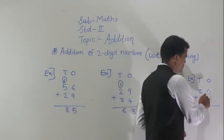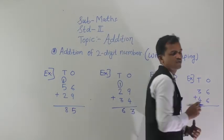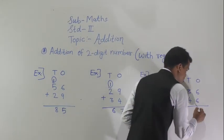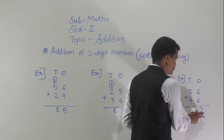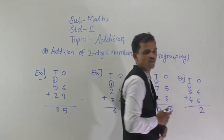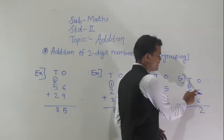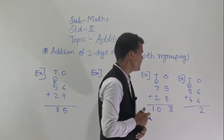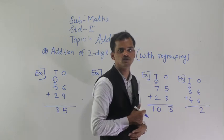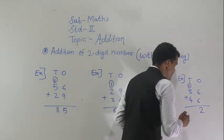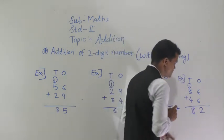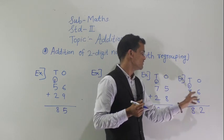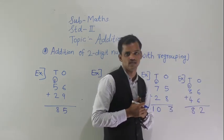Next example: 36 plus 46. First add the ones column: 6 plus 6 equals 12. Write 2 here and carry 1 forward. Then 3 plus 4 equals 7, and 7 plus 1 carry equals 8. So read this number as 82. 82 is the sum of 36 and 46.